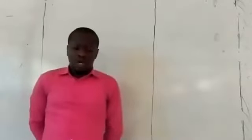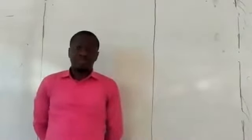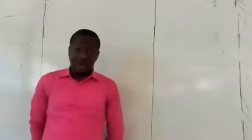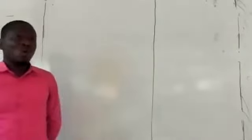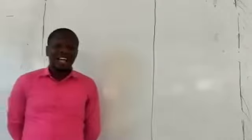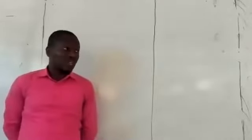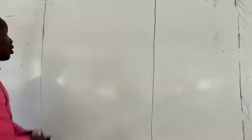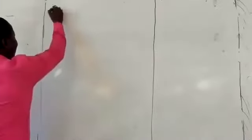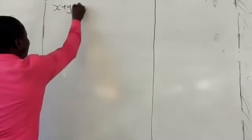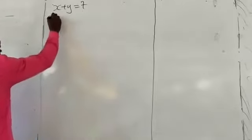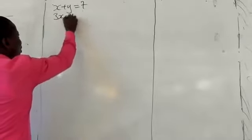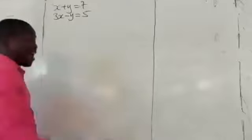So let's take a look at examples of simultaneous equations. Example number one, we are asked to solve a simultaneous equation. That is: x plus y equals 7, and 3x minus y equals 5.